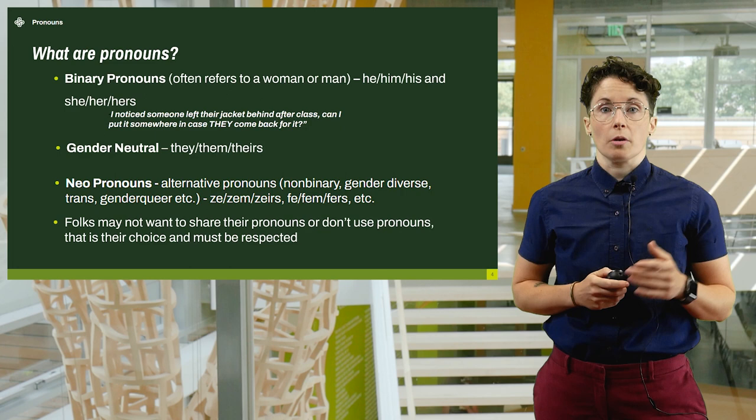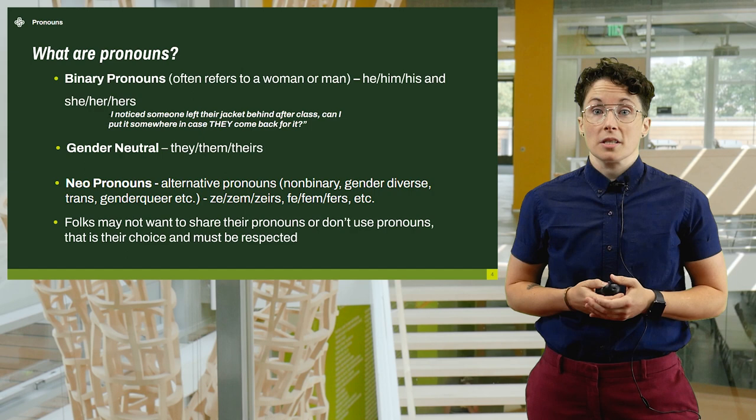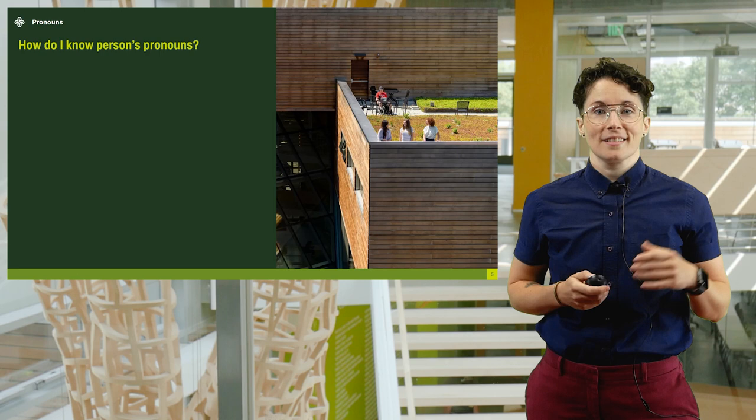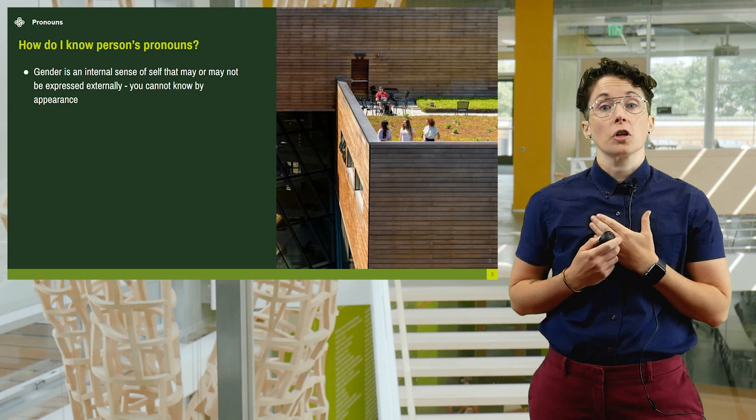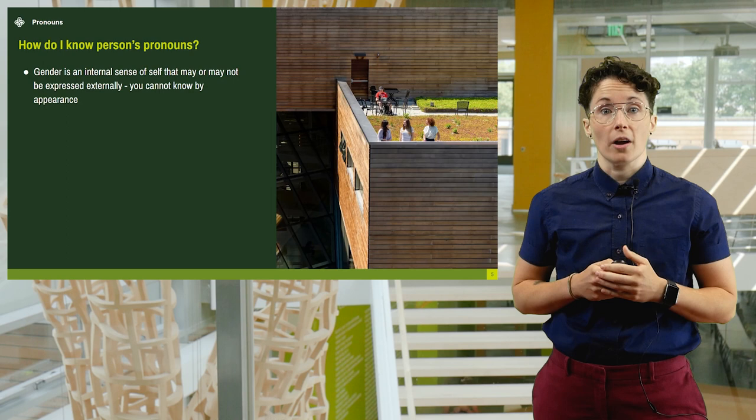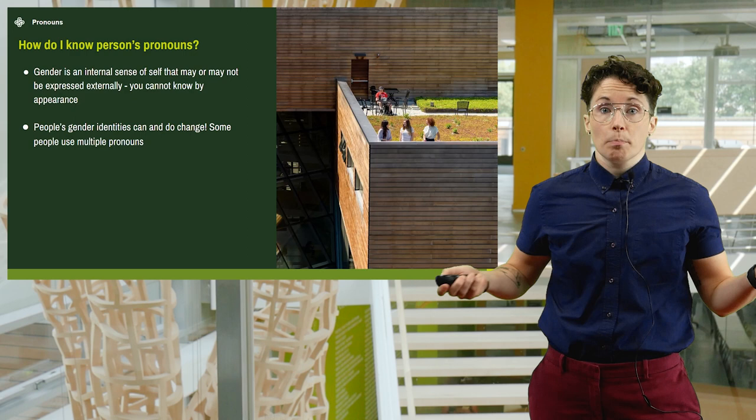How do I know a person's pronouns? Well first, bodies and genders are very separate things. Gender is an internal sense of self that can be non-binary, male, female, trans, no gender, genderqueer, etc. You cannot tell a person's gender and/or pronouns by looking at them. People's gender identities can and do change. There is no one way to be any gender, and assumptions about pronouns based on a person's appearance can be harmful.